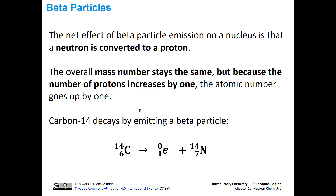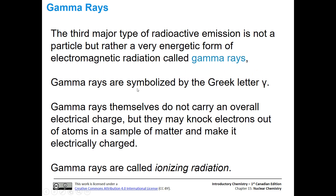In beta particle emission, the overall mass number stays the same, but the number of protons increases by 1, so the atomic number goes up by 1, and we look up that new atomic number on the periodic table to find a different element. For example, carbon-14 (atomic number 6, mass number 14) decays by emitting a beta particle. After ejecting that electron from the nucleus, we now have 7 protons instead of 6, while the mass number stays at 14. So we go from 8 neutrons and 6 protons to 7 protons and 7 neutrons.